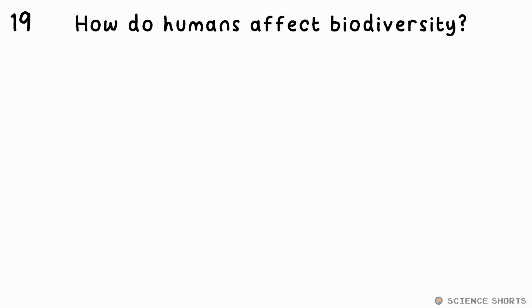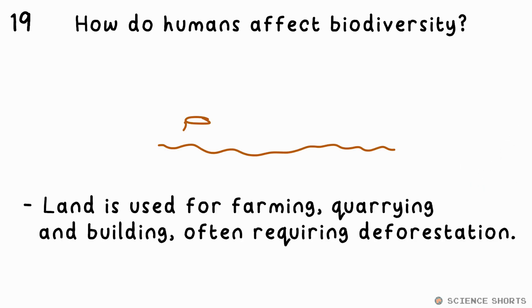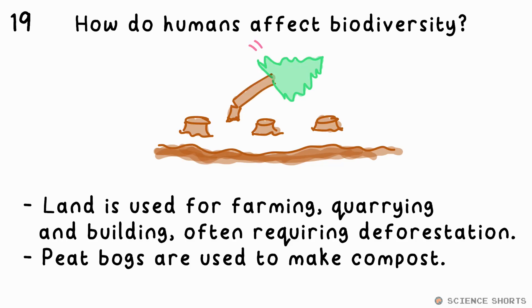Question 19. How do humans impact biodiversity? We as humans use lots of land for building, quarrying, and other purposes. Often this requires deforestation. Another thing is that we use peat from peatbogs to make compost. This also reduces biodiversity.